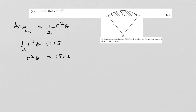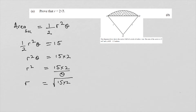Divide both sides by theta, because we know what theta is. R squared equals 15 times 2 divided by theta. Now to find R, we need to square root both sides, so R equals square root of 30 over 1.5. We cannot get a negative radius, so we take the positive root.